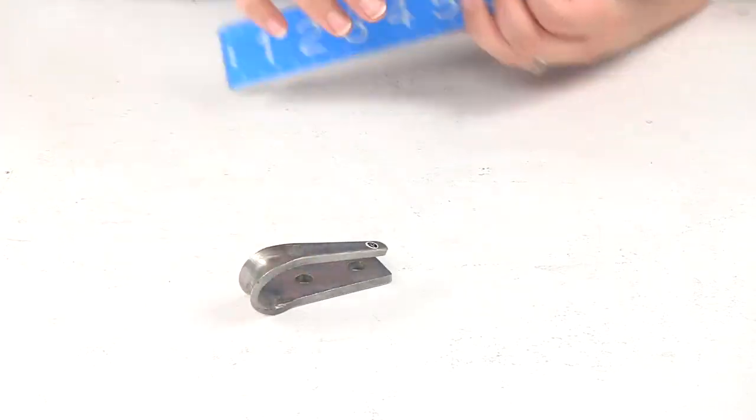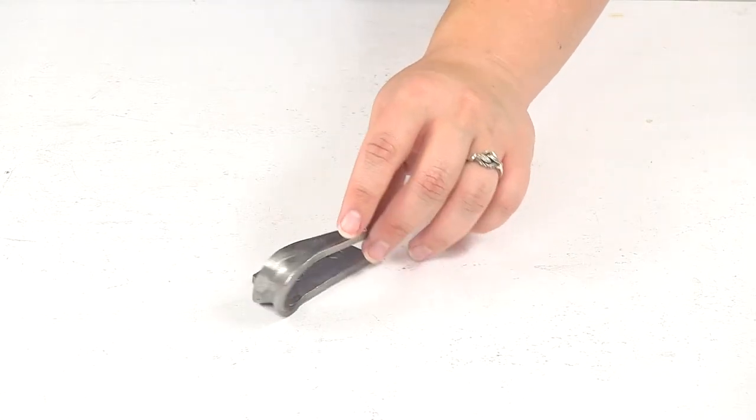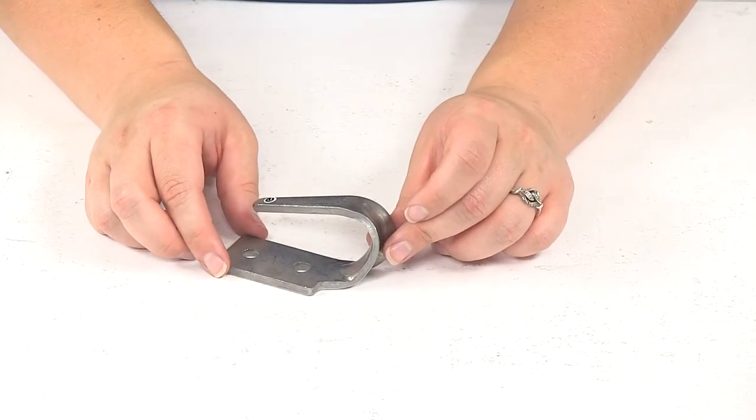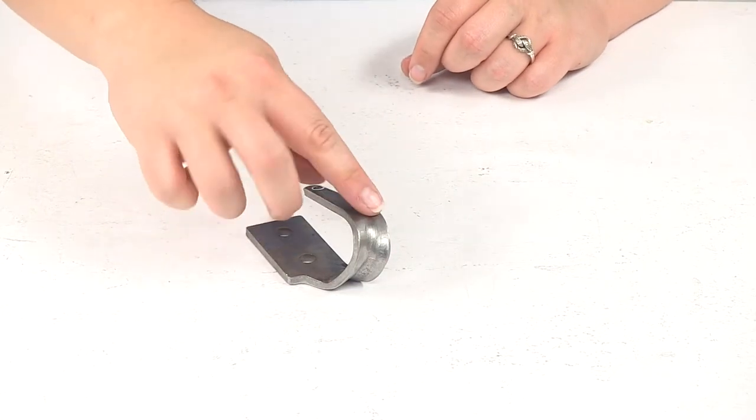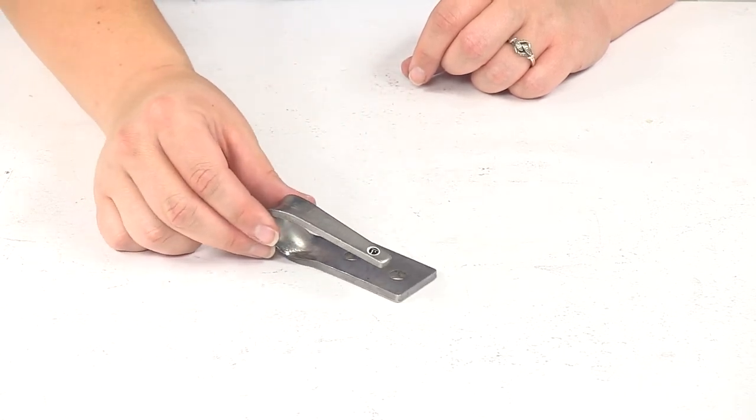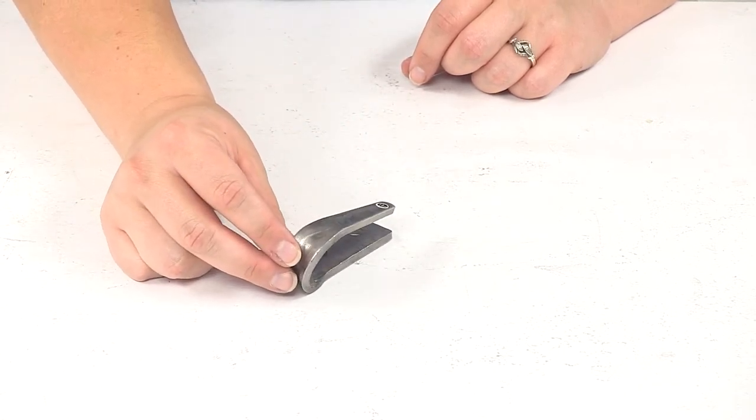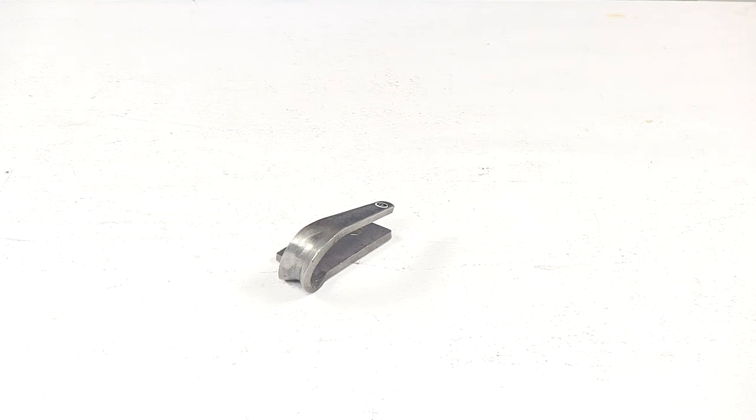That gives you an idea about how much space you have to use with that hook to get anything you would need attached. That's going to do it for our look at the lock and roll tie down anchor point for tarps and straps. Thank you.